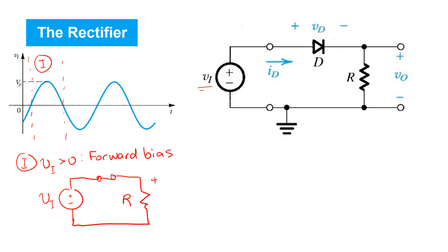And we can find the resulting current flow from Ohm's law.